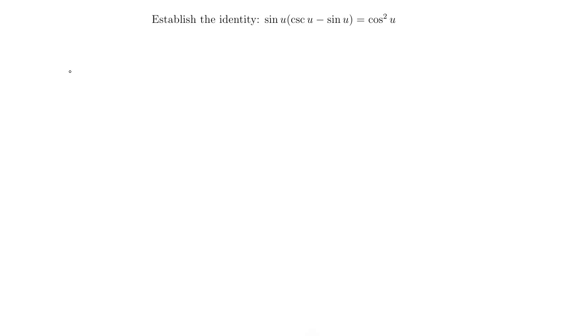Today I have a couple establish the identity problems for you, and we're going to start with this one here. Sine of u times the quantity cosecant u minus sine u is equal to cosine squared u.